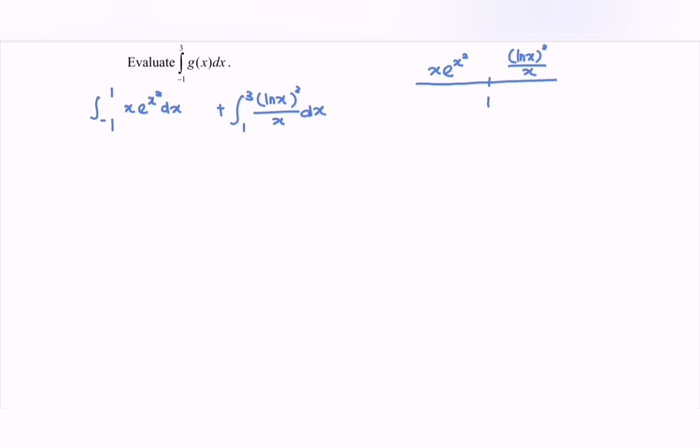So integrate the situation. First, making use of the substitution method, let u equal x squared. Differentiate u with respect to x, so here we have 2x. We can rewrite the situation, we have du over 2 equals x dx.